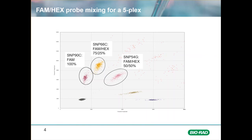The third positive cluster detects SNP54G and is created by adding 50% FAM and 50% HEX. Next, the SNP43C positives are a result of adding a mixture of 25% FAM and 75% HEX probe. Finally, the SNP38C positive cluster is 100% HEX probe.